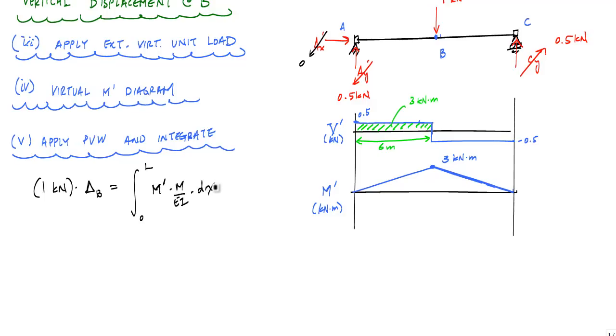I'm going to go ahead and use charts or the product integration product tables to solve this out. And what I like to do is draw out what my moment diagrams look like in a very small scale. So my virtual moment diagram is this triangle, where this value is 3 kilonewton meter, and this base is 12 meters.